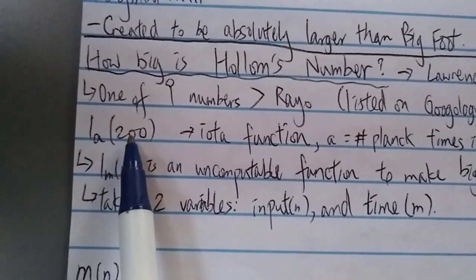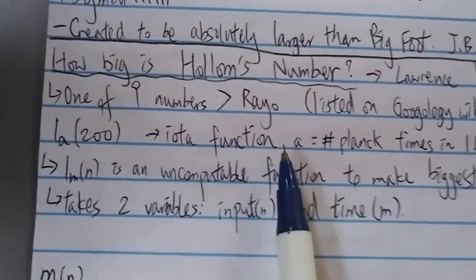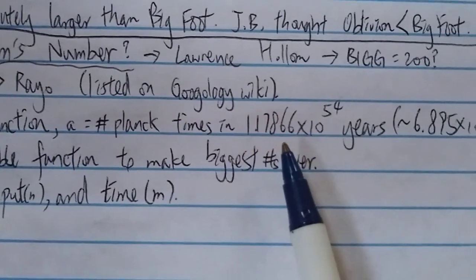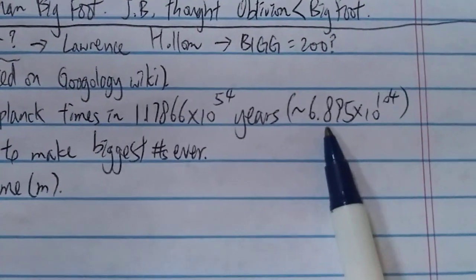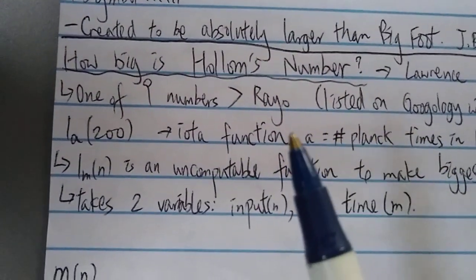What is this? So basically it's written this way: i_a(200). The i stands for the iota function, and a stands for the number of plank times in this many years, which is around this many plank times.